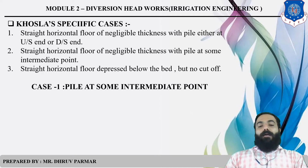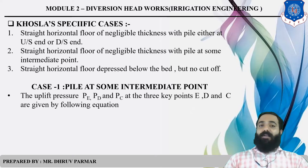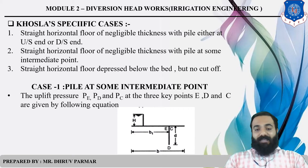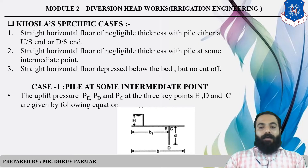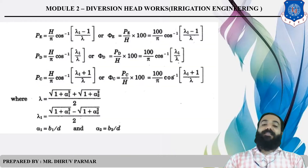For case one — pile at an intermediate point (middle point, not upstream or downstream) — there are three key points called E, D, C. How can you find uplift pressure at these three points? Using formulas PE, PD, PC given by Khosla theory. This diagram shows the pile provided at an intermediate point, not a downstream side.